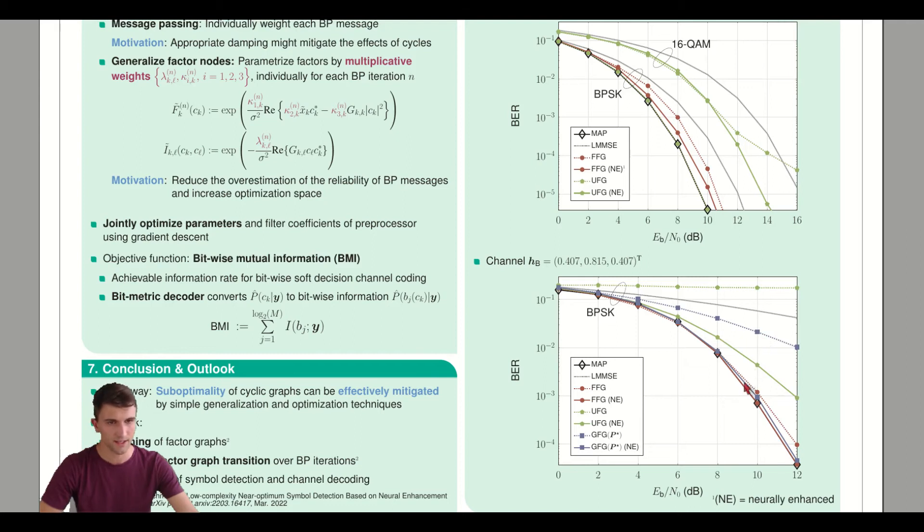If we look at the Ungerberg model which was quite poor, we can also significantly improve. This neural enhancement works on different factor graphs.